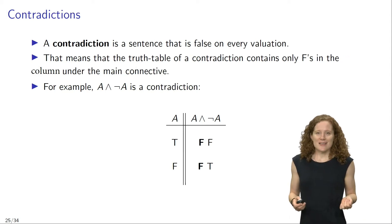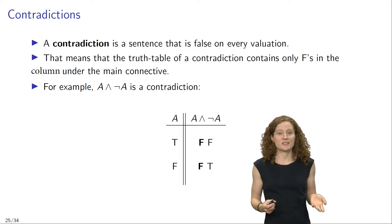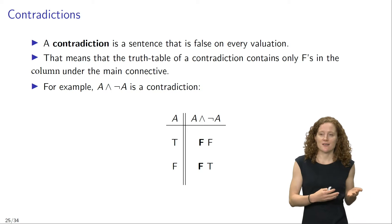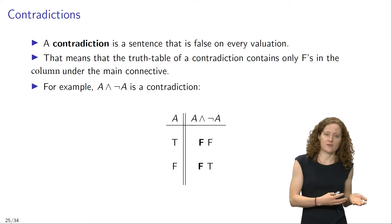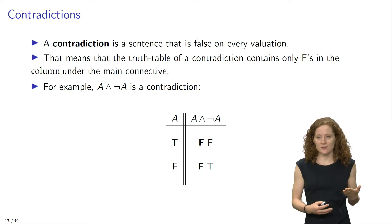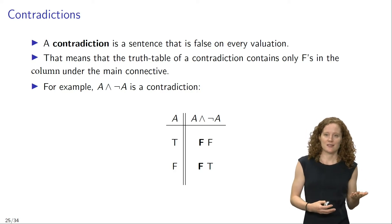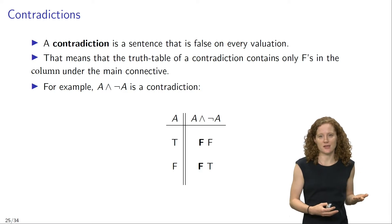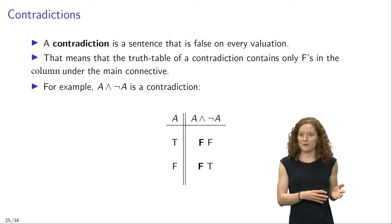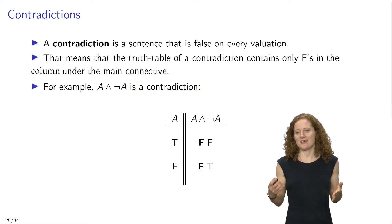Our second new semantic concept is that of a contradiction. A contradiction is a sentence that is false on every valuation. That means that the truth table of a contradiction contains only Fs in the column under the main connective of that sentence. For example, the sentence 'a and not a' is a contradiction.